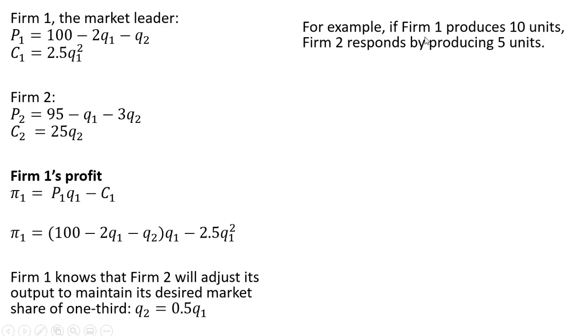For example, if firm one, the market leader, produces ten units of output, firm two, the follower, will respond by producing five units. So if you plug ten in for q subscript one, firm two will produce five units to maintain one-third of the market share. Just plugging those numbers into our market share equation from the first slide, and that does indeed equal one-third.